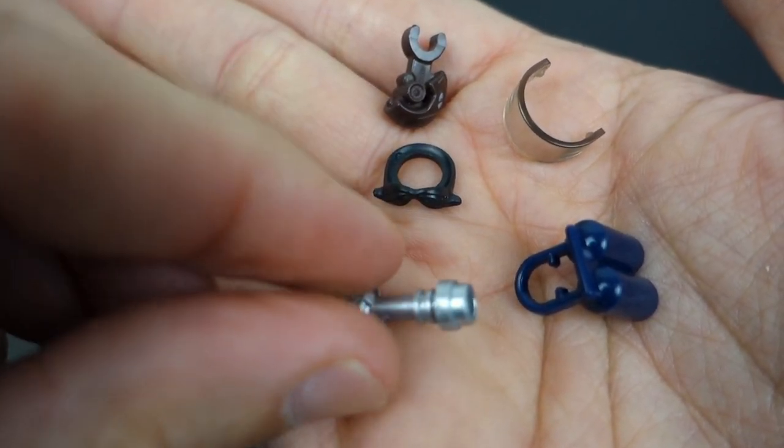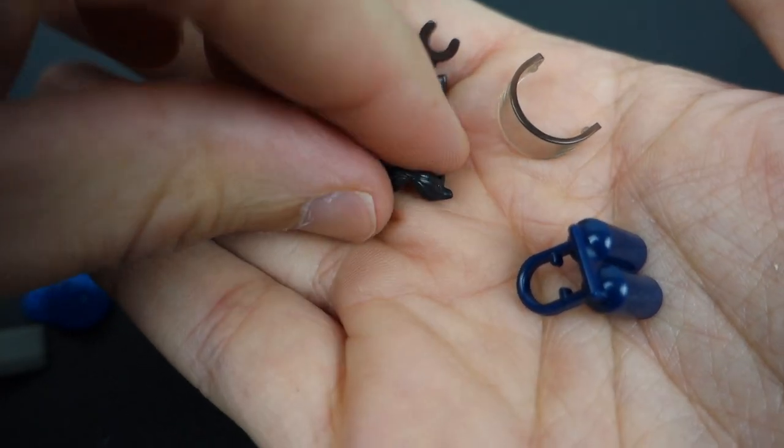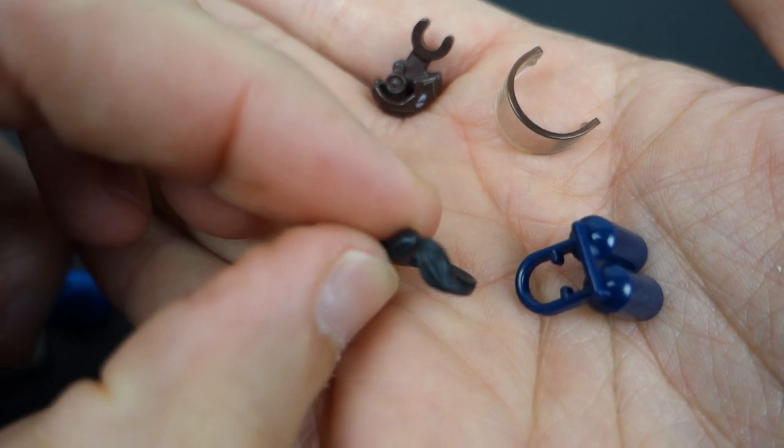I think this is from Star Wars. I know there's some Star Wars fans that are watching this, you'll be able to let me know for sure. This right here is kind of cool. I don't know if this is LEGO or not but this is like a little mustache that will go around a minifigure's head.